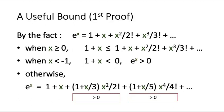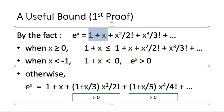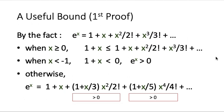In our first proof, we look at x greater than or equal to 0 and see that e to the power of x equals 1 plus x plus a non-negative term, because x is greater than or equal to 0, plus another non-negative term, and so on. So in the end, e to the power of x equals 1 plus x plus some non-negative term, and therefore the inequality we want to prove holds.